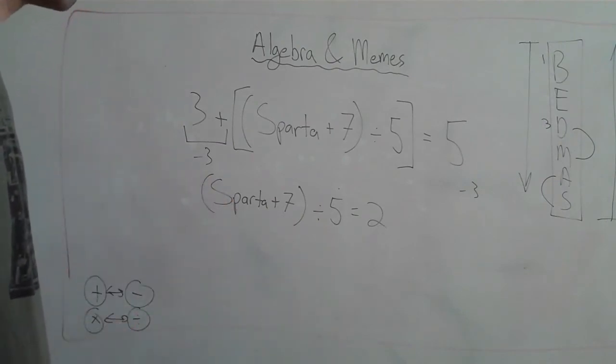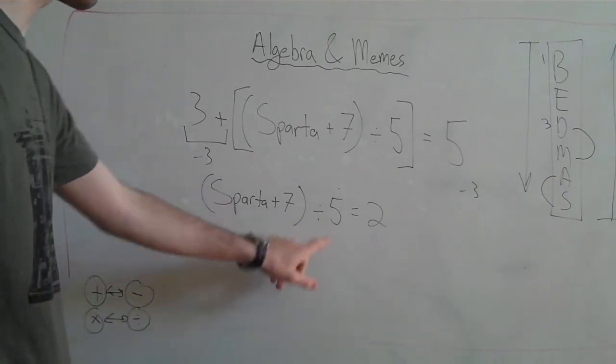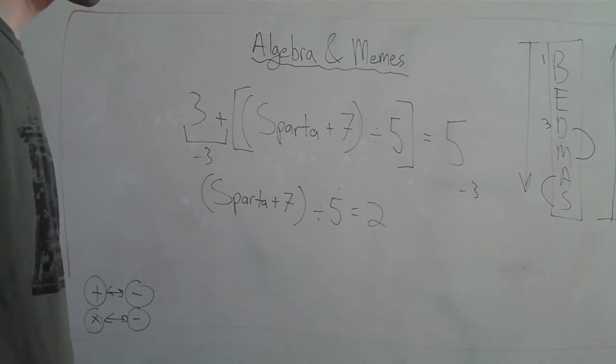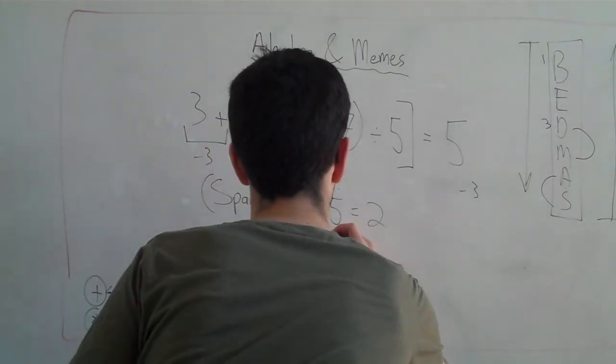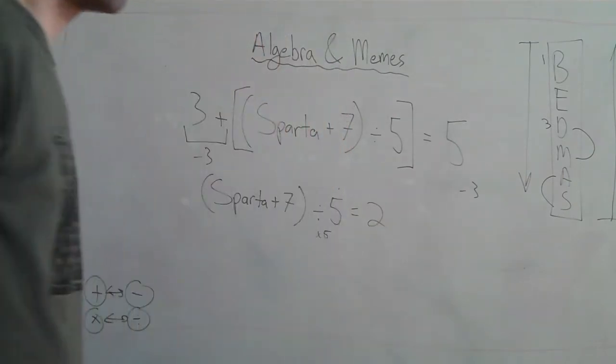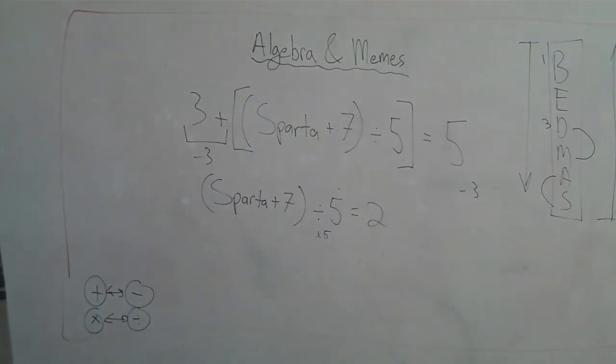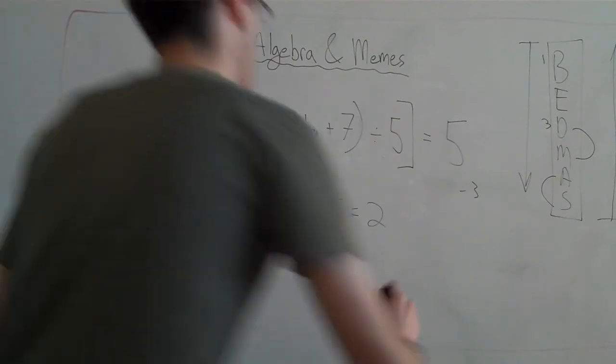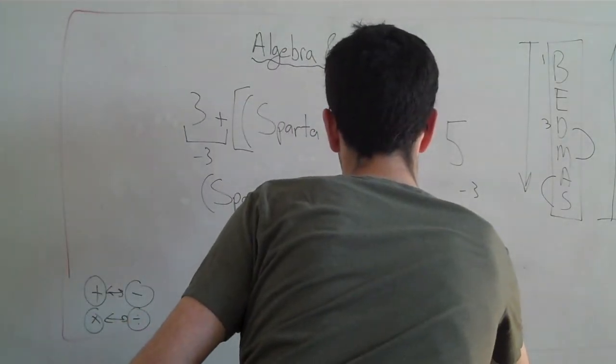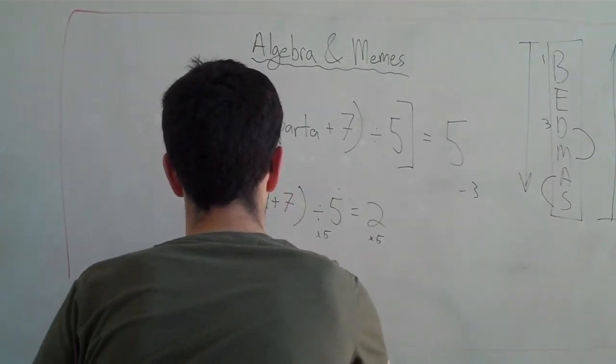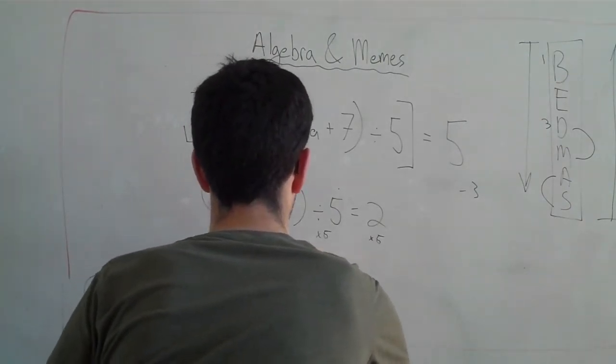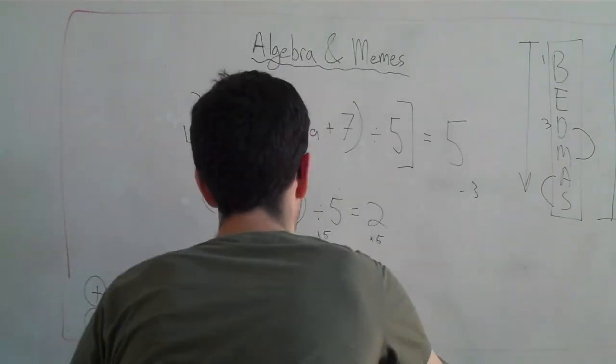So we're going to get rid of the divide by 5. How do we get rid of a divide? Times. That's right. So what are we going to do here? Make a divide by 5 times 5. Beautiful. What are we going to do here? Do 2 times 5. Fantastic. So I'm going to rewrite over here. And 2 times 5 is 10. Very good.